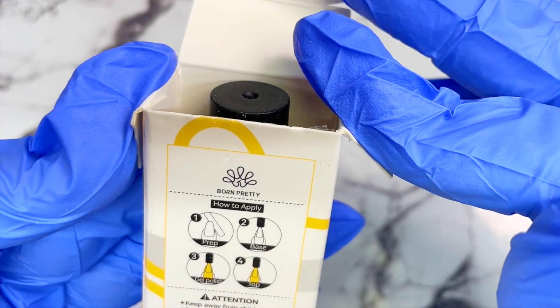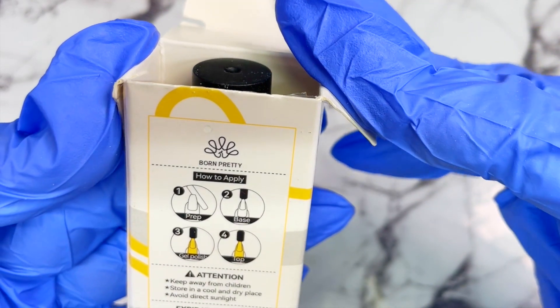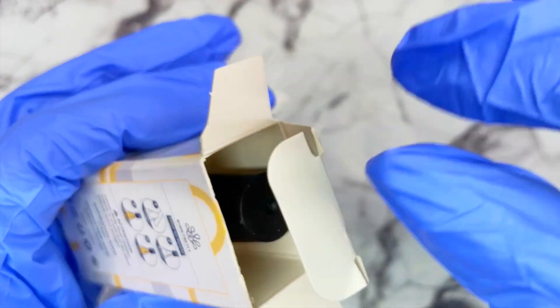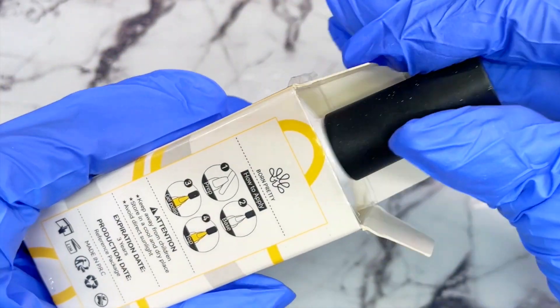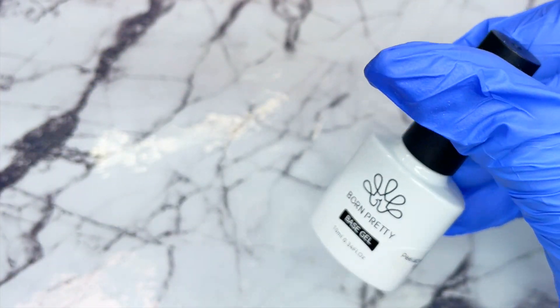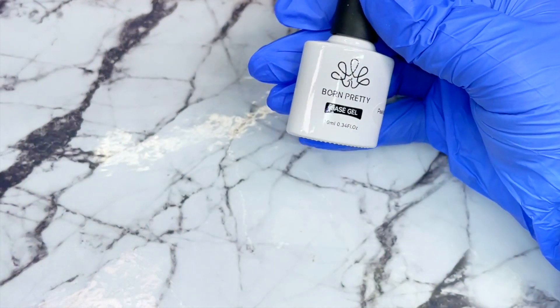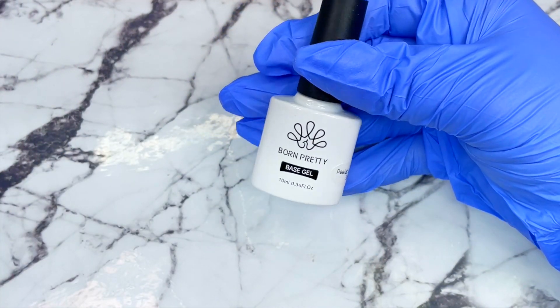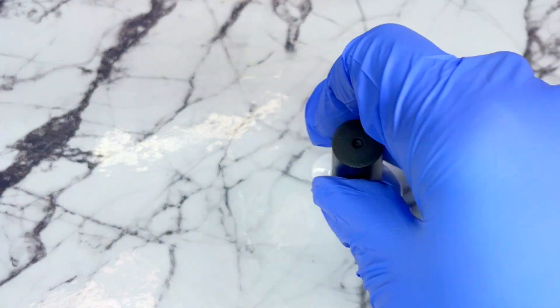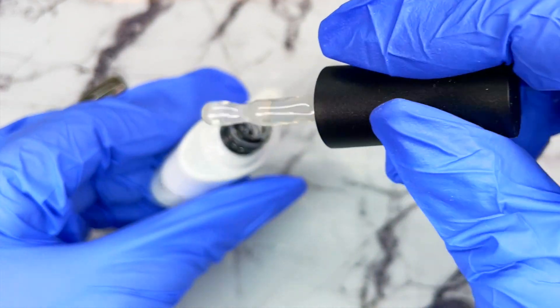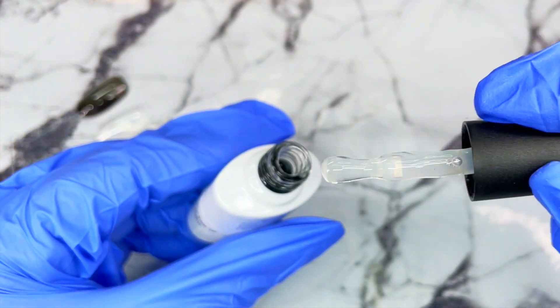Next, this is something I never tried from them which is their peel off base coat. I do think this is something that needs to be cured, and again it's 10 milliliters, nice glass bottle. This is very thick, look at that, really really thick, it's almost like a builder gel.